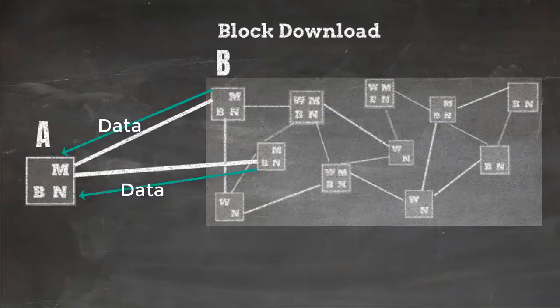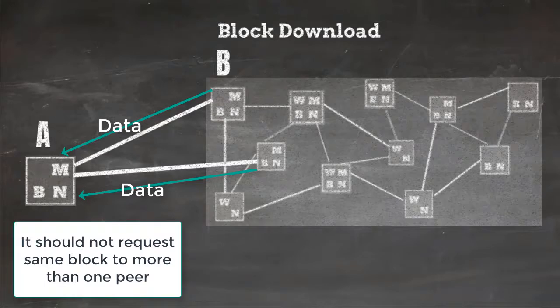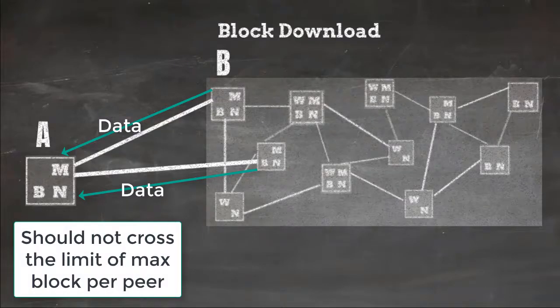Node A will keep track of blocks which it has already requested but not received because it should not request same block to more than one nodes. Also it should not cross that limit of maximum blocks per peer.